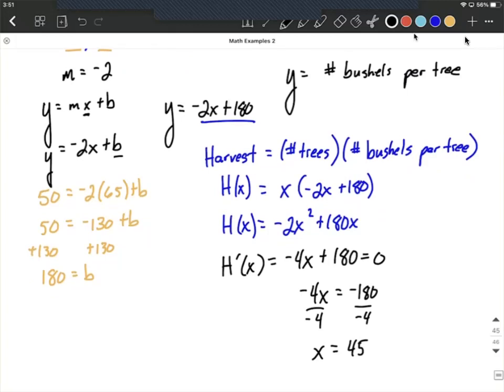Remember, X is the number of trees per acre. So she should be planting 45 trees per acre to maximize her harvest. Now, how do we know that's going to be a maximum instead of a minimum? We know it's a critical number because it was when the first derivative was equal to zero. We can make sure that it's going to be a maximum by looking back at that original function, which is a quadratic, meaning that it's going to be a parabola as a graph. And that first term, the leading coefficient, is negative, meaning that it opens down.